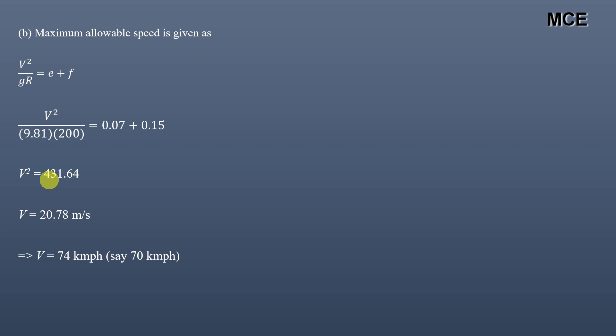We round this down to 70 km per hour. So the maximum allowable speed for this road, for a design super elevation of 0.07 and a maximum allowable friction of 0.15, is 70 km per hour.